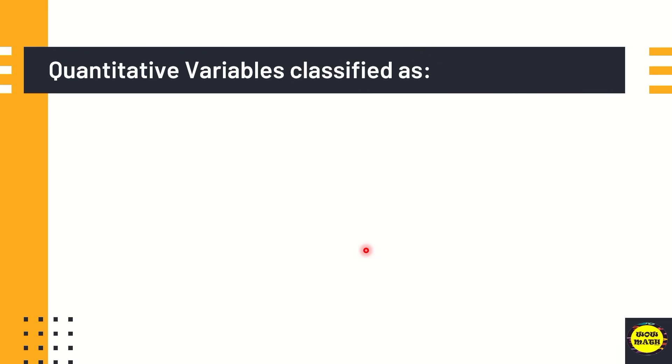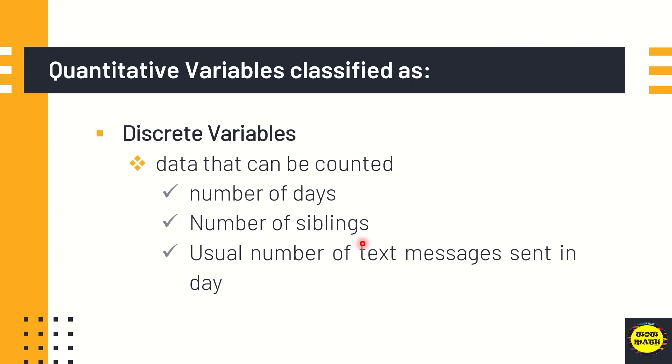Quantitative variables are classified as discrete variables. When we say discrete variables, that is data that can be counted. For example, the number of days, number of siblings, the usual number of text messages sent in a day, and the daily allowance in school.